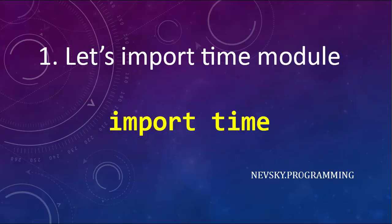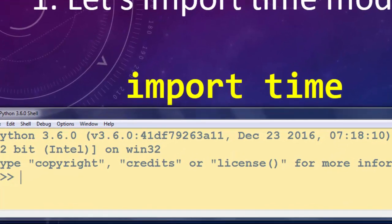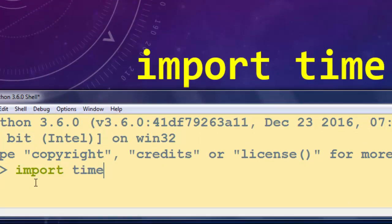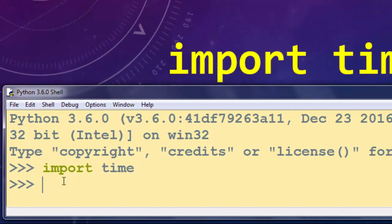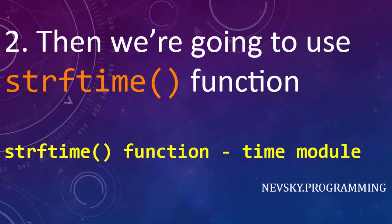In order to get the current date and time in a certain format, first we need to import the time module. I'm going to open my Python IDLE and import the time module, then press Enter. The second thing we need to do is use the strftime function, which is from the time module. Since we've already imported it, we can use strftime in our examples.